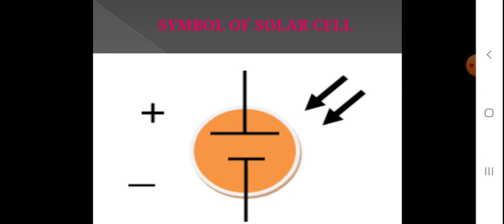This solar cell is basically a PN junction type and has a circuit symbol. The solar cell symbol indicates a positive and negative side. In the PN junction diode: P is positive, N is negative. Positive charge carriers on the P-side are holes, and negative charge carriers on the N-side are electrons. This is the circuit symbol of the solar cell.